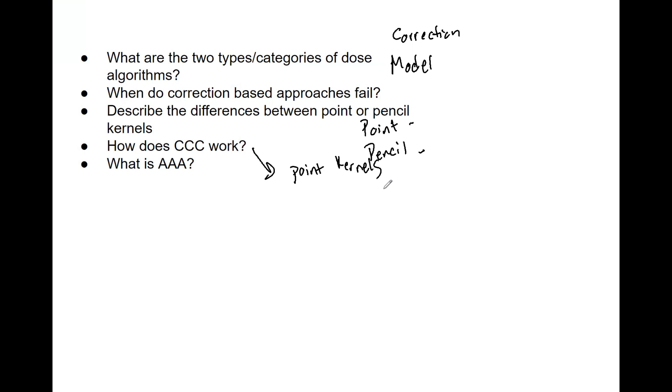Typically it's used by the Pinnacle treatment planning system. So not as good as Monte Carlo, but it's much faster and it still has very good accuracy. Now the AAA algorithm—it is a 3D pencil beam convolution superposition using Monte Carlo kernels.